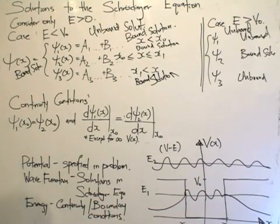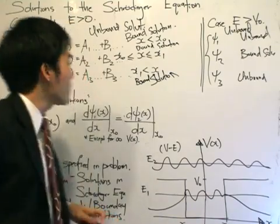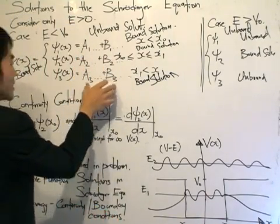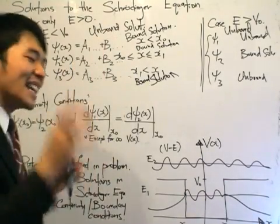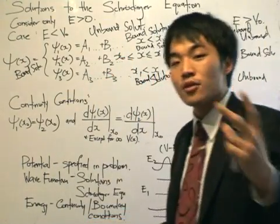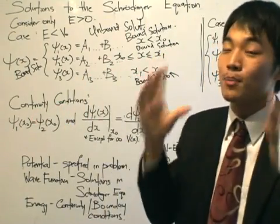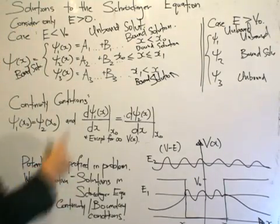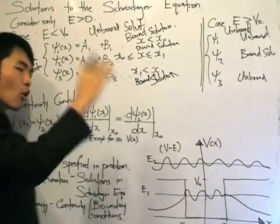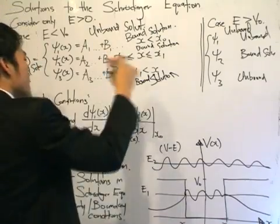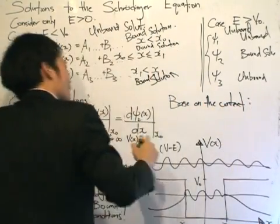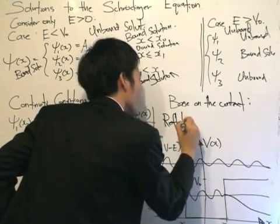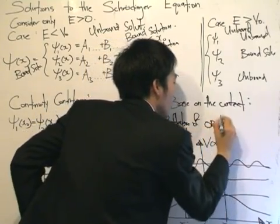Now, the last thing I want to mention before we wrap up is the coefficients. The time-independent Schrödinger equation gives us two linearly independent solutions — that's why we write A1, B1, A2, B2, A3, B3, where the subscripts correspond to the subscripts of psi, just for labeling purposes. Why do I leave them blank? Because we're not yet at the stage to identify the specific solutions. Remember, there are two types of solutions: e to the ikx and e to the kx. There are times where we can eliminate certain coefficients based on the context.